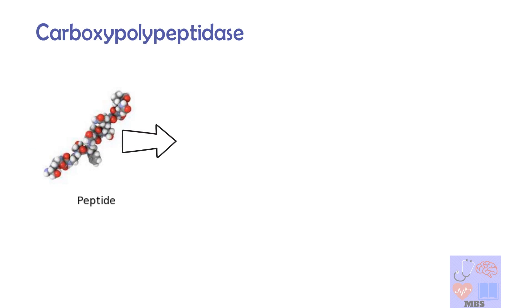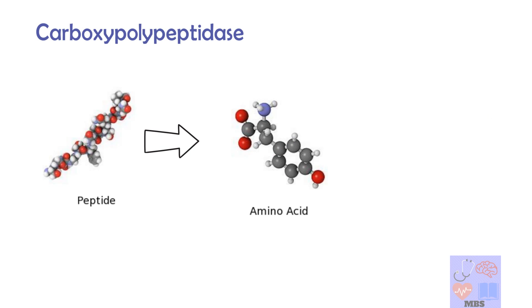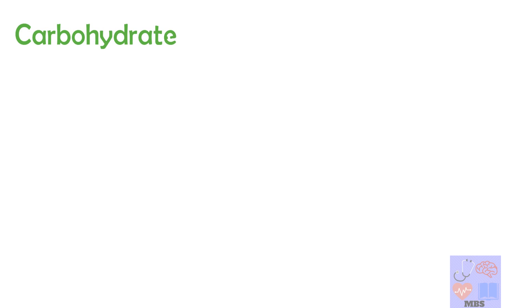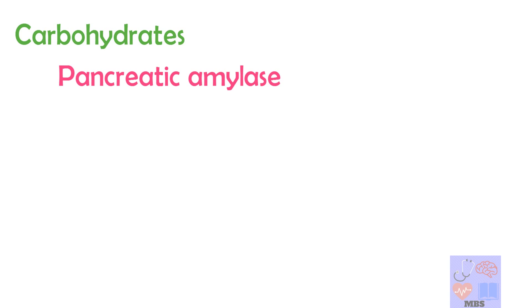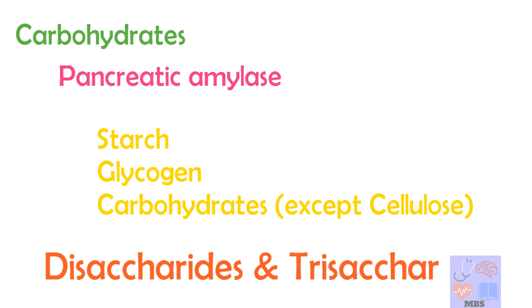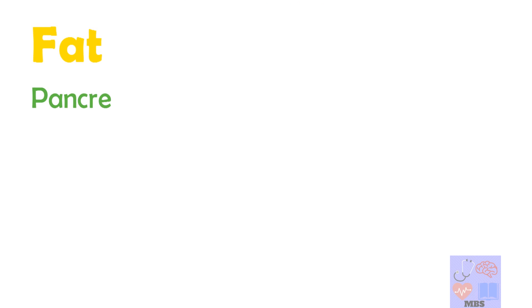For absorption, proteins must be converted into amino acids. This is the role of the third enzyme: carboxypolypeptidase, which splits peptides into individual amino acids. Food also contains carbohydrates and fat, both of which are digested by pancreatic secretions. For carbohydrates, the enzyme used is pancreatic amylase, which hydrolyzes starch, glycogen, and other carbohydrates, forming disaccharides or trisaccharides.